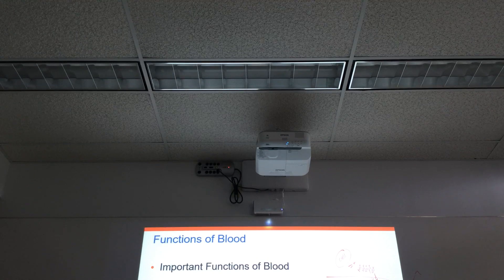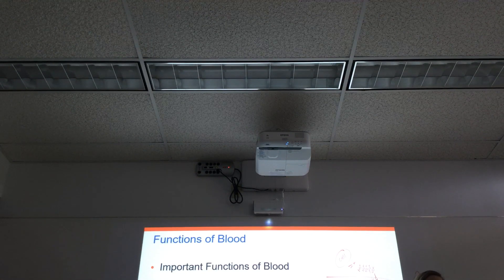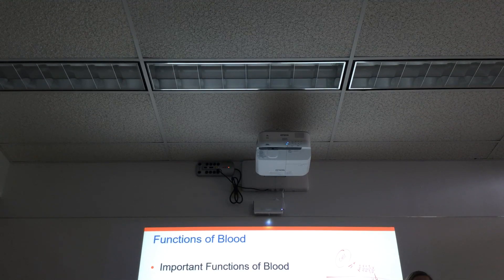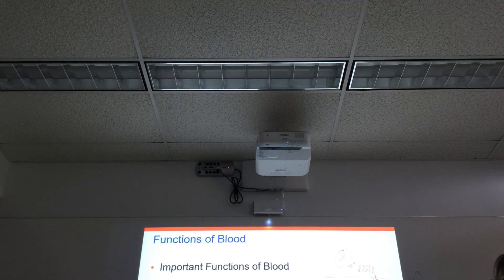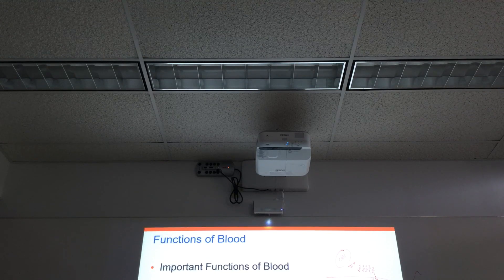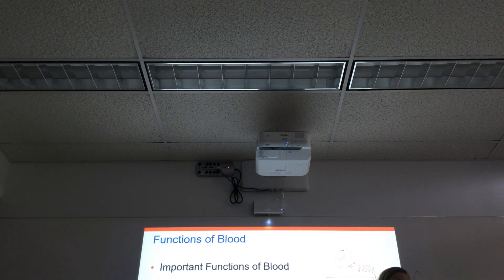The blood is important in defending the body against toxins and pathogens. A pathogen is a disease-causing organism — that could be a bacterium, a virus, a fungus, anything that can cause a disease in you. The blood is really important in defending the body against these things. We have white blood cells that defend the body and things like antibodies that travel through the bloodstream, making the blood extremely important in defending against infection and disease.